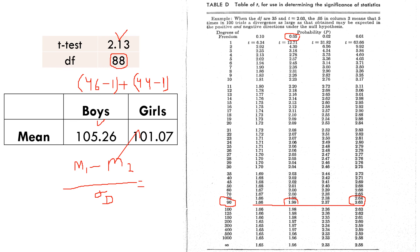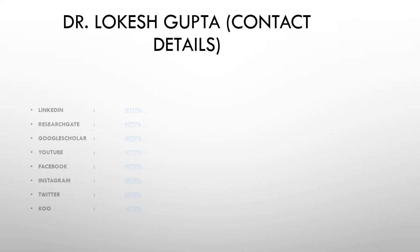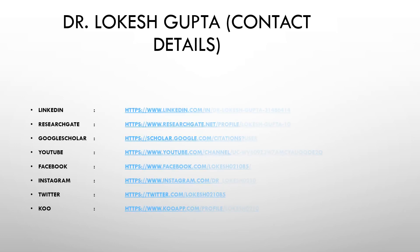This is the way we can calculate an independent t-test manually. Based on the interpretation, we reject our null hypothesis because there is a significant difference. Thank you so much for watching this video.